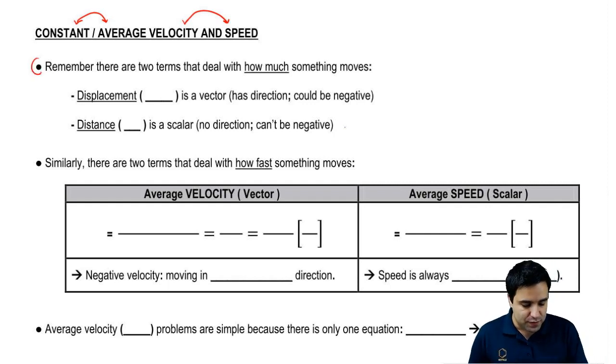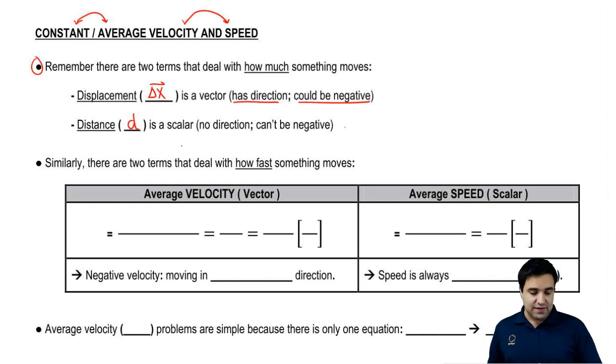First remember, we talked about this earlier, there are two terms that deal with how much something moves. Those terms are displacement, which is given by delta x. It's a vector, so it has direction and could be negative. The other term is distance d. It's a scalar, so it doesn't have direction and can't be negative.